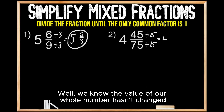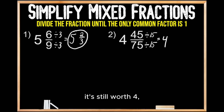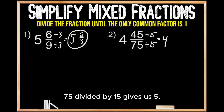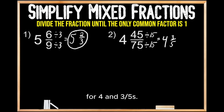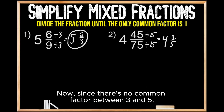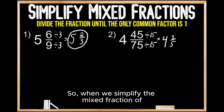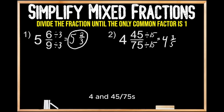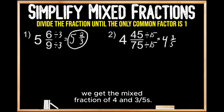The value of our whole number hasn't changed — it's still worth four. For the denominator, seventy-five divided by fifteen gives us five, and for the numerator, forty-five divided by fifteen gives us three, for four and three-fifths. Since there's no common factor between three and five other than one, we're done. When we simplify the mixed fraction of four and forty-five seventy-fifths, we get the mixed fraction of four and three-fifths.